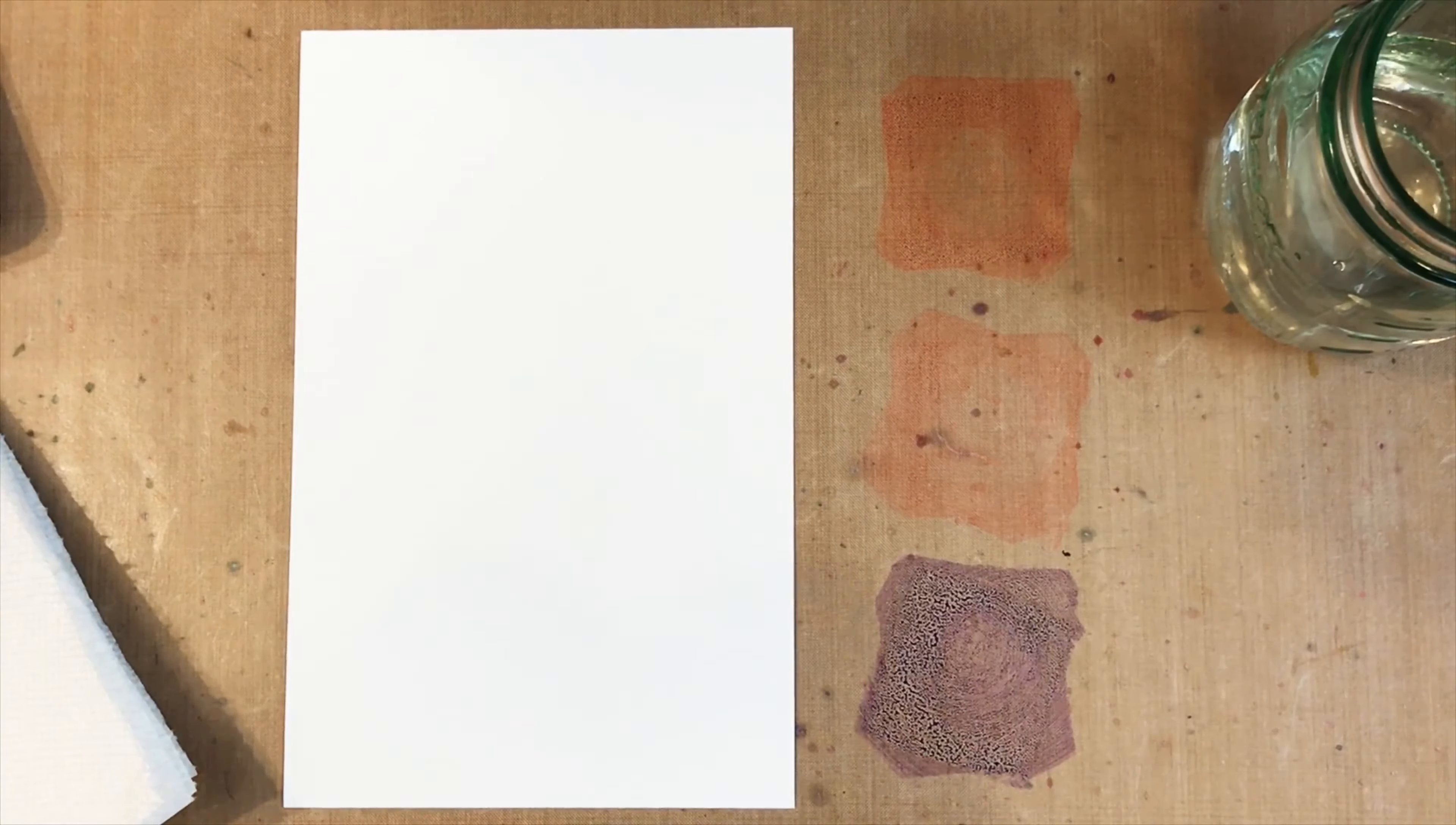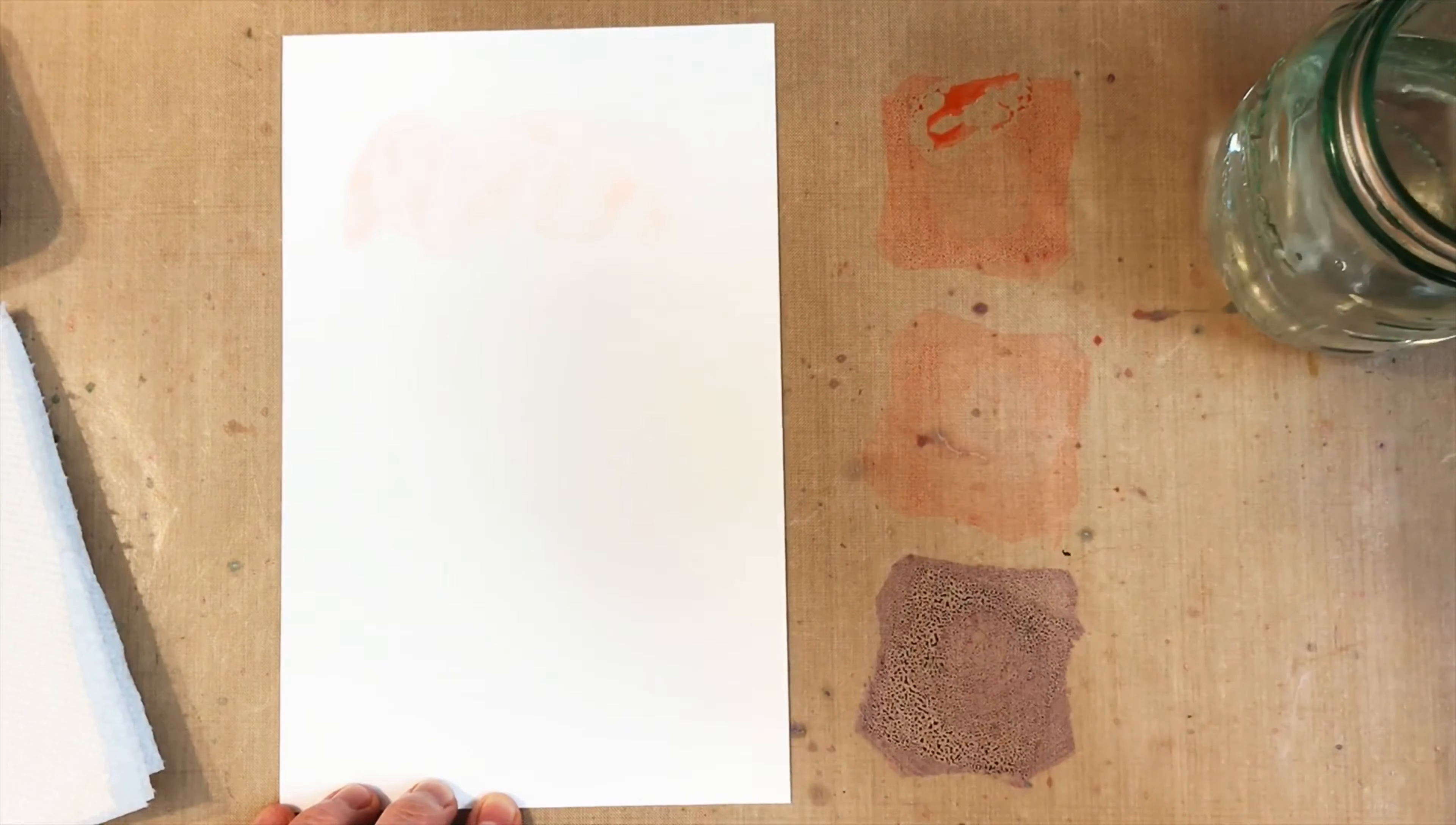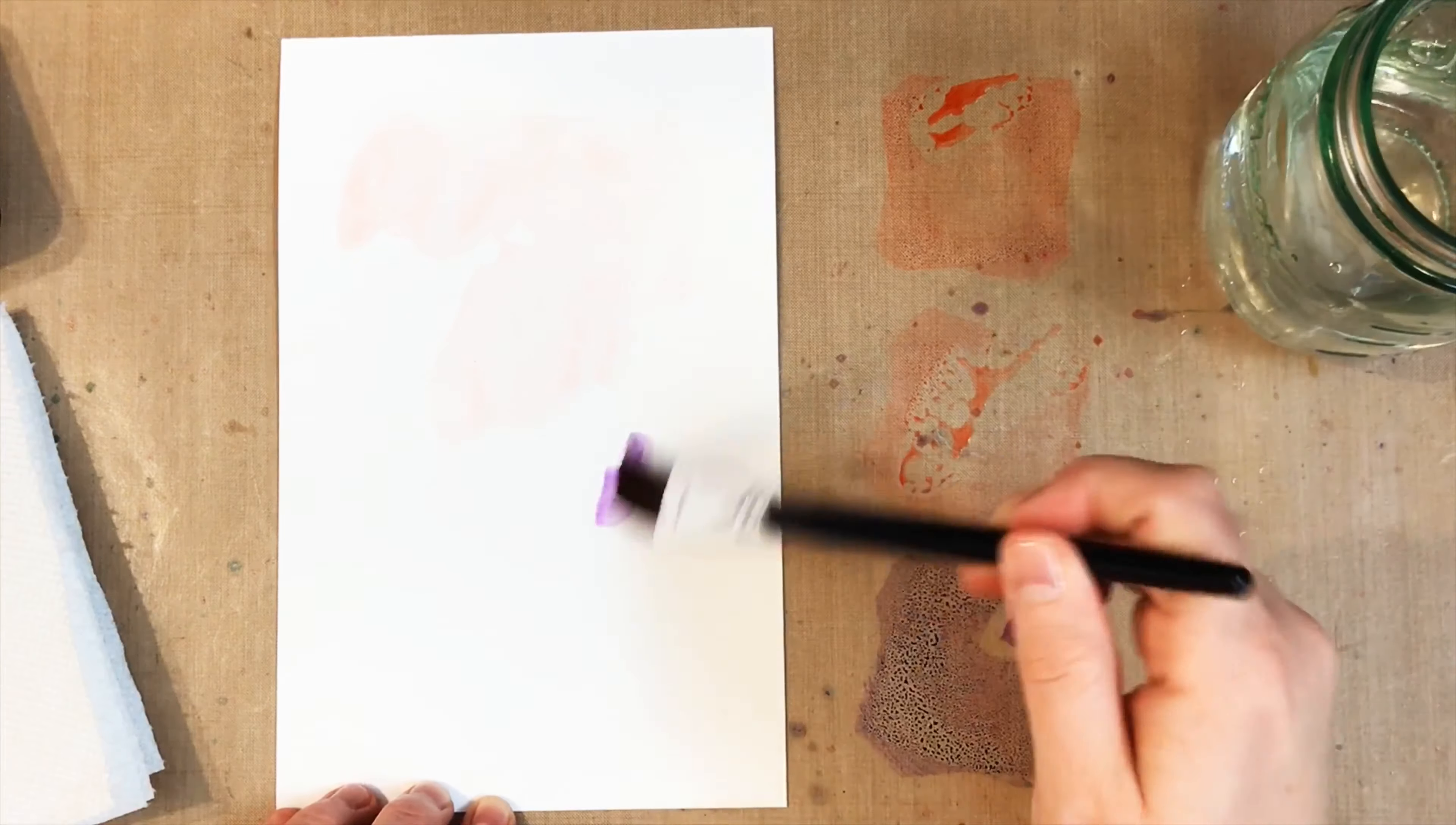I'm starting with some white watercolor paper and three colors of distress ink that I'm swiping on my craft mat and then painting a background that is very soft and loose and has lots of water and no real rhyme or reason.